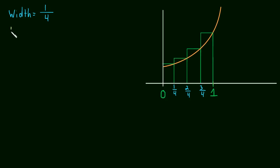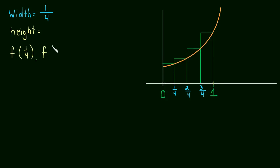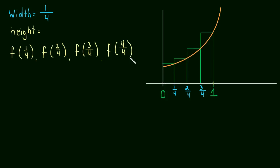The heights were just the f of the x values. So f of one-fourth was the height of the first rectangle, f of two-fourths was the height of the second rectangle, f of three-fourths was the height of the third, and f of four-fourths — or in other words, f of one, it's the same thing — these were the heights of the four rectangles.